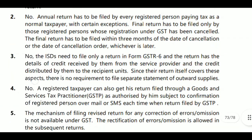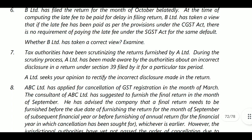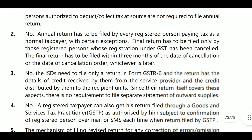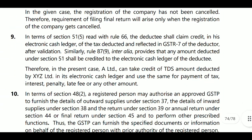Question number seven: Tax authorities have been scrutinizing the returns furnished by A Limited. During the scrutiny process, A Limited was made aware by the authorities about an incorrect disclosure in the return under Section 39 filed by it for a particular tax period. A Limited wants to rectify that incorrect disclosure. Rectification of incorrect disclosure cannot be made on its own once authorities have come — before authorities came, the taxpayer may rectify on their own, but after authorities have come, it is not allowable on their own.